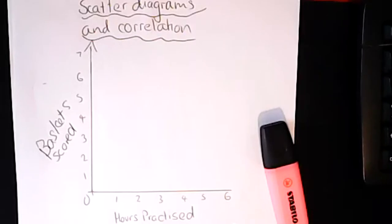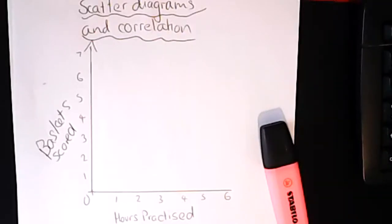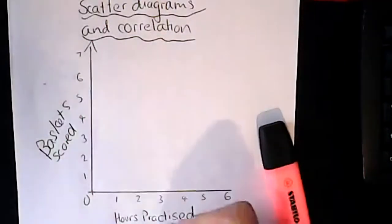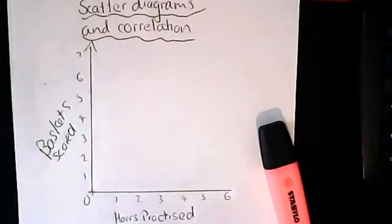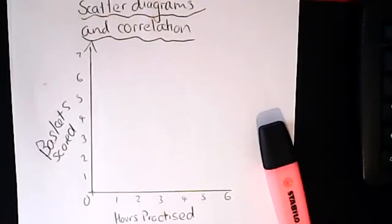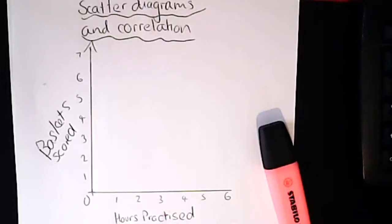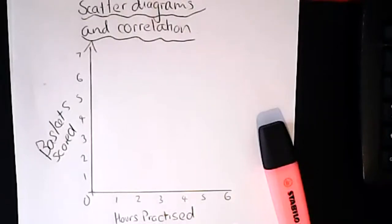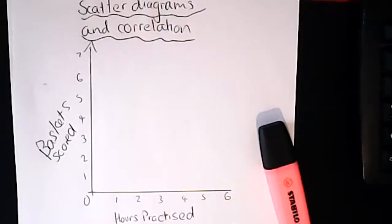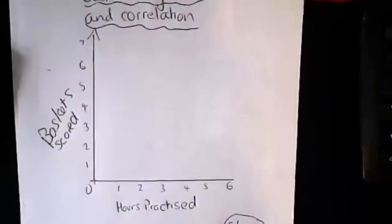Scatter diagrams are all about one thing affecting another thing. On the graph we can see number of baskets scored and hours practice. I'm watching a program on Netflix called The Last Dance about the Chicago Bulls, my favorite basketball team. I also used to play basketball. We've got a basketball team with 10 players who vary very much on how much they practice. At the end of the week they have a test to see how many baskets they can score, having 10 goes.